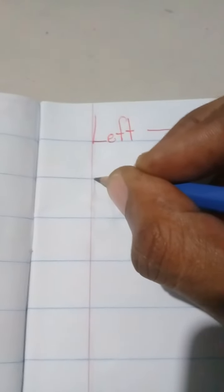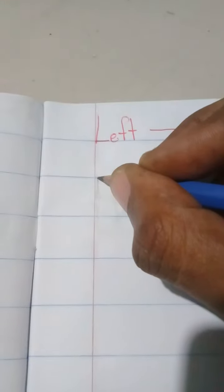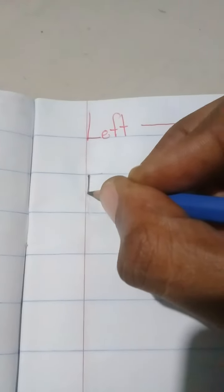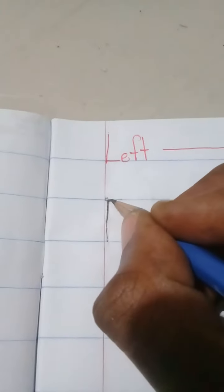For our first letter we begin at the margin, touch the top blue line and we go down to the bottom blue line. We go across on the blue line, the top one to the right, and then in the middle across.